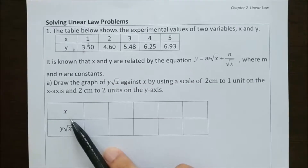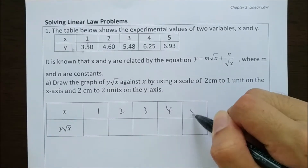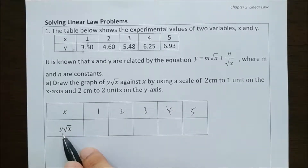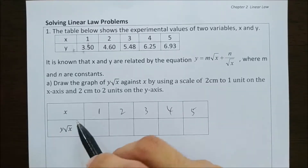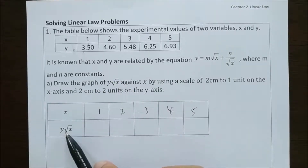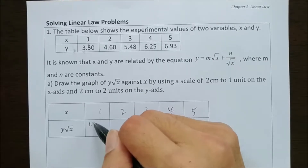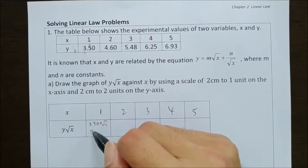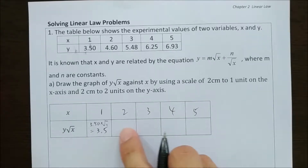For the x-axis, we can copy the values directly — x will be 1, 2, 3, 4, 5, with no changes. For the y-axis, we want to plot y multiplied by the square root of x, so we take each y value and multiply by the square root of x. For example, the first one is 3.5 times the square root of 1, which gives 3.5. We do the same for the rest.